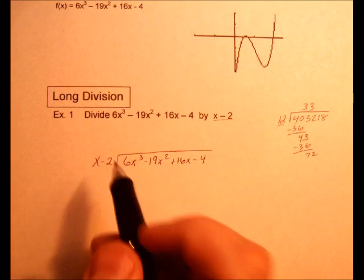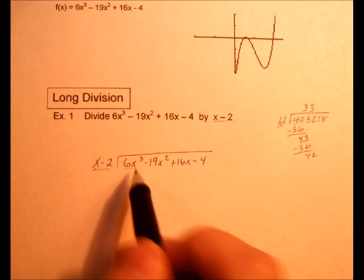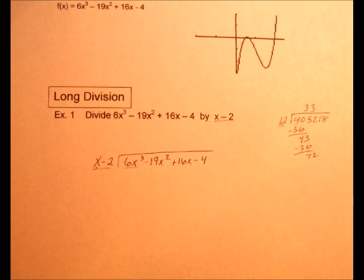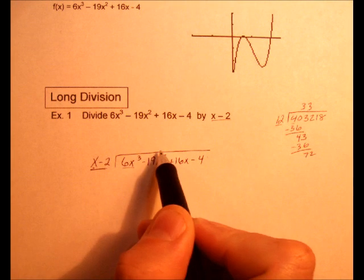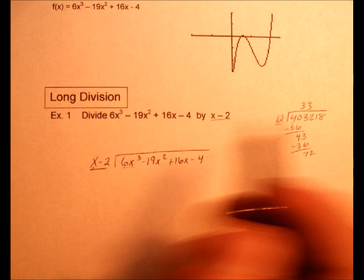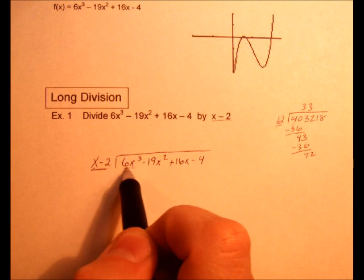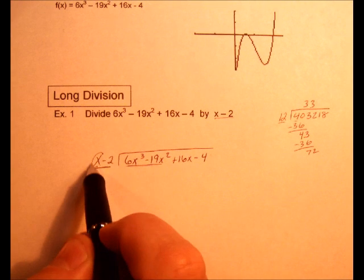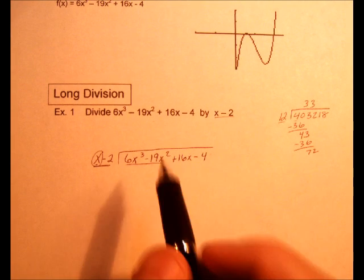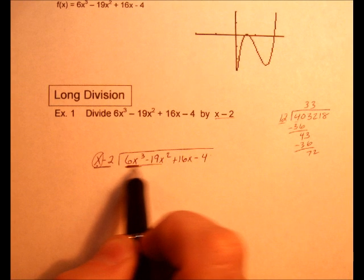Okay, so we have x-2. Of course, that cannot go into just the 6x³, because it's two terms into one. You have to have 2 into 2. So we're not going to start there, but we're going to scoot over just like what we did with the 3 over here. So we're going to go into these two terms.